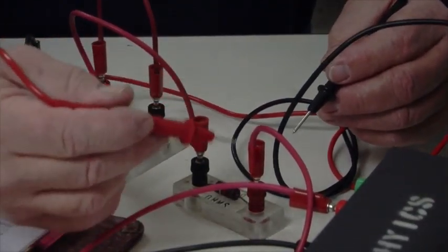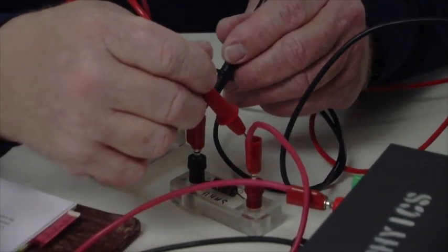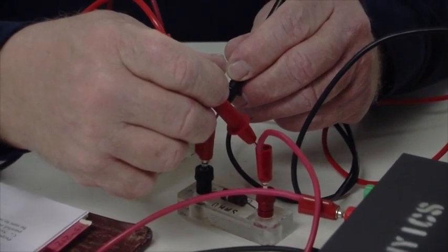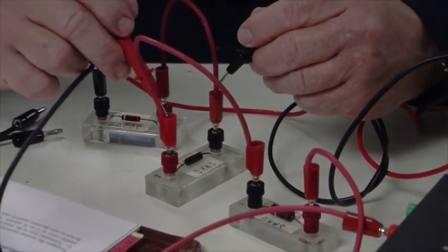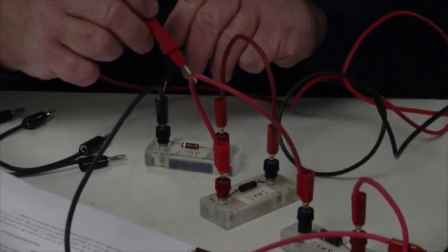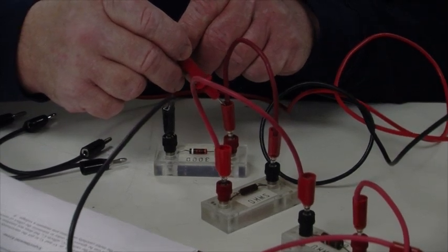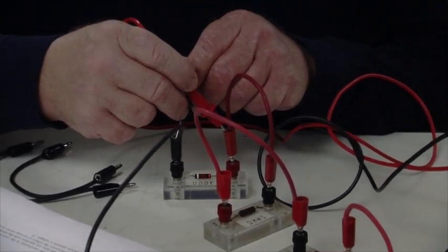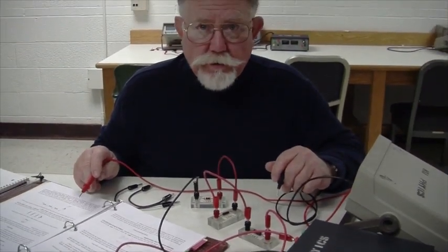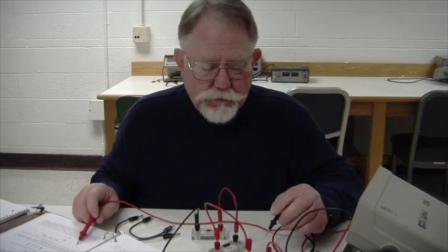Now to measure the potential differences across each resistance, we can probe them directly. I'm getting about a 2 volt drop across that one. About a 4 volt drop across this one. And about a 5.8 volt drop across this one. Now there are some questions in the instructions that you need to answer. So be sure and record those values.